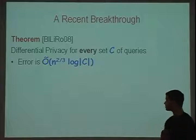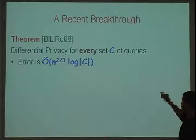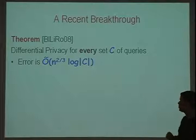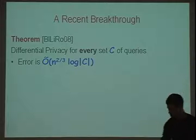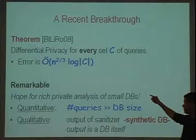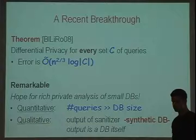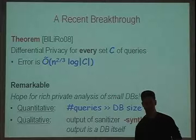The first such result was given in a recent breakthrough last year — the result of Blum, Liggett, and Roth. They showed you can get rich data analysis, answering many more queries than the database size. They showed you can answer any set of queries with error something like n^(2/3) times log the size of the query set you're trying to answer. It's a remarkable result: even if the number of queries is very large — sub-exponential in the database size — your error is still pretty small. It's also remarkable qualitatively: the output of their sanitizer is what we call a synthetic database.